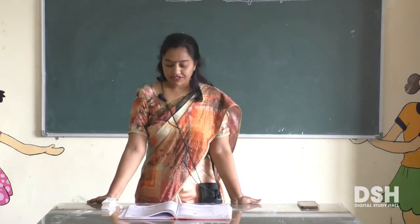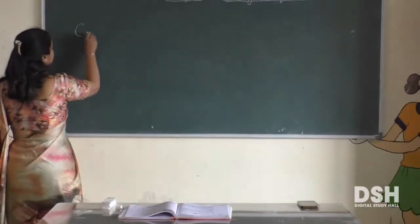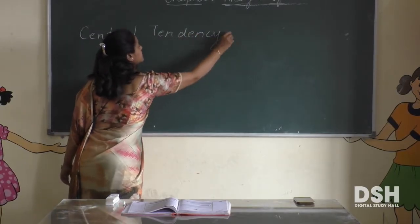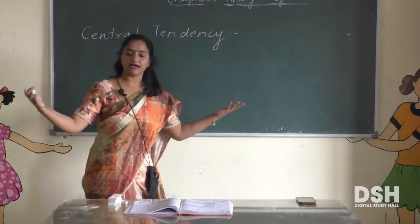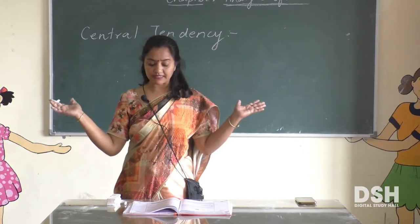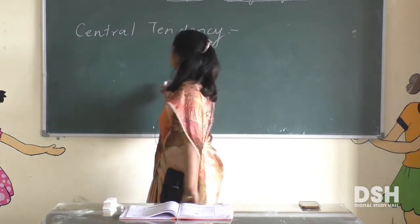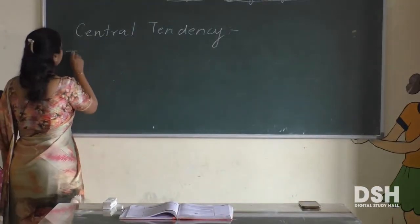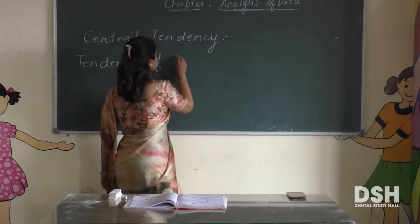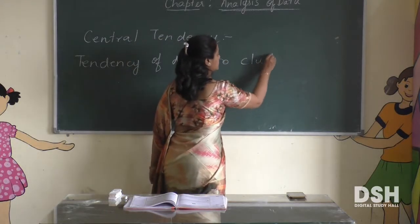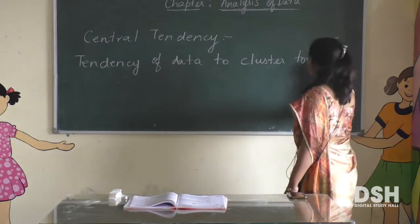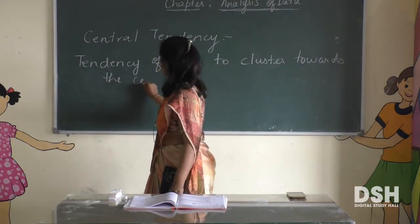Now in this chapter, Analysis of Data, we are going to learn about arithmetic mean. First of all, central tendency is a term used in this chapter. Central tendency means the tendency of data to cluster towards the center location.